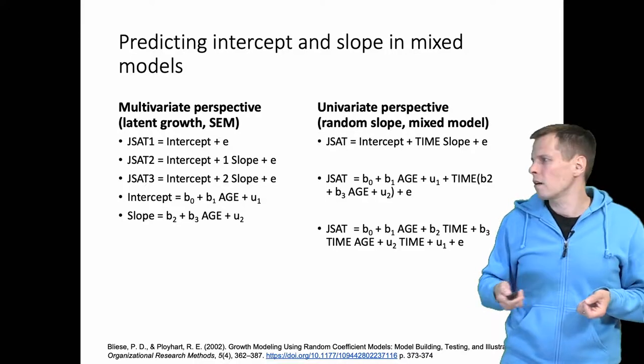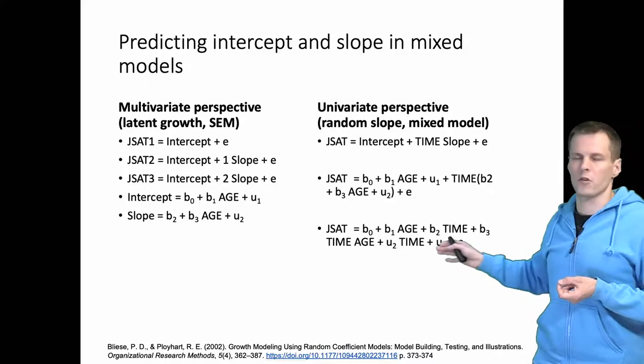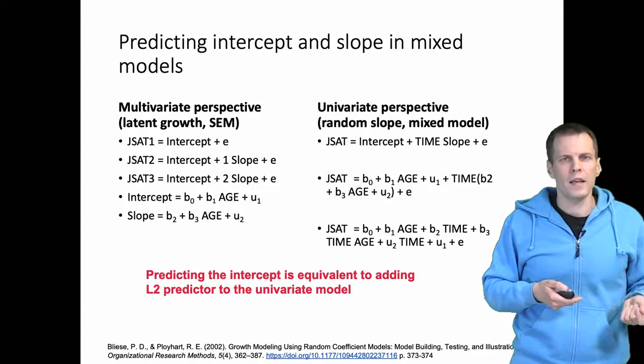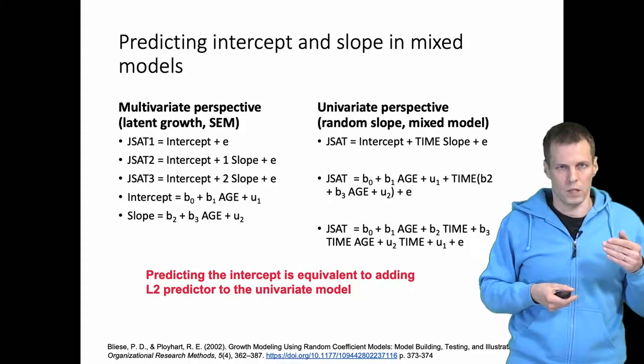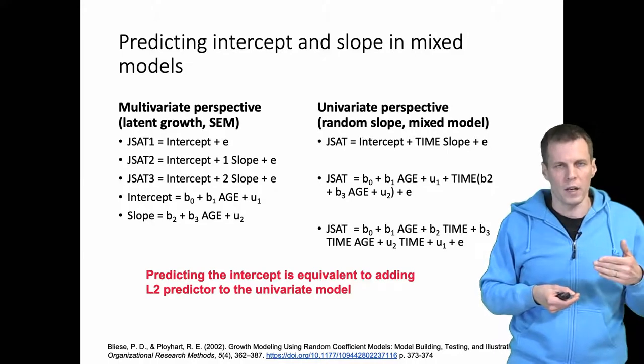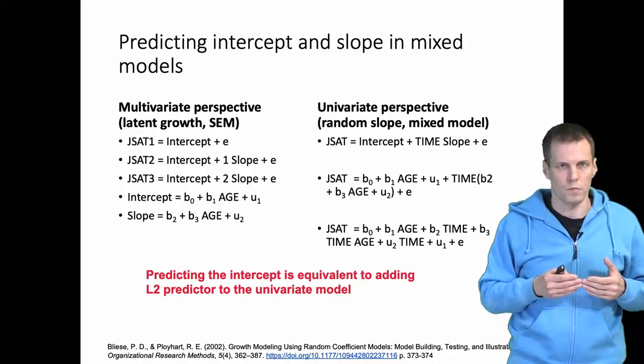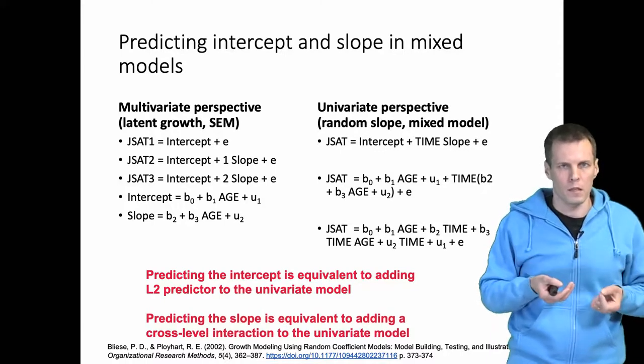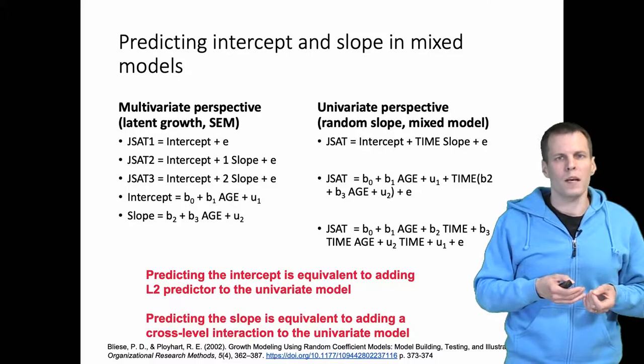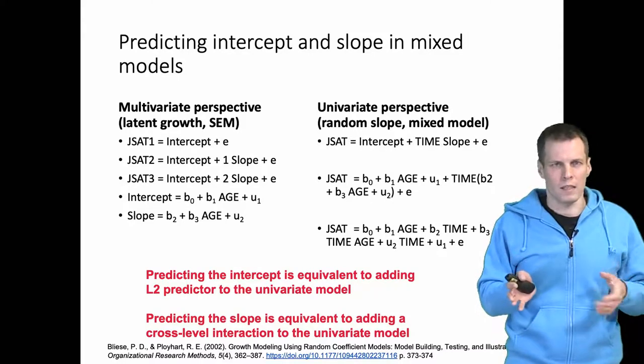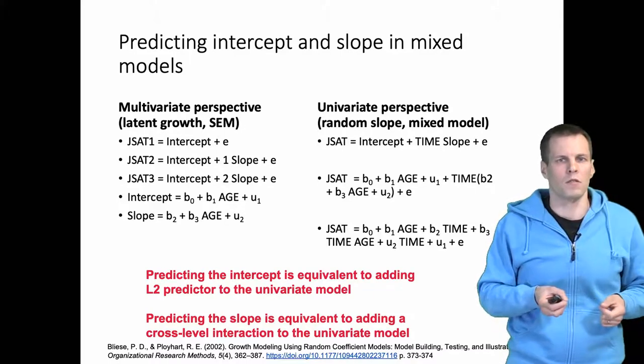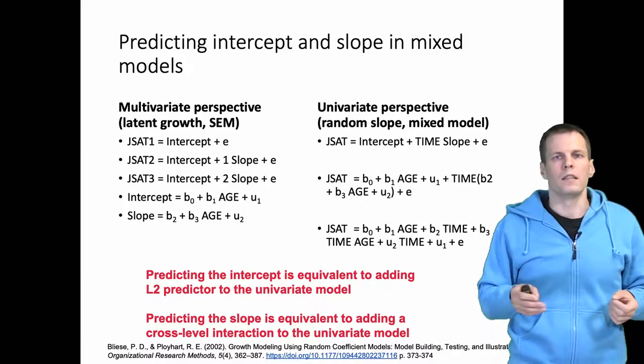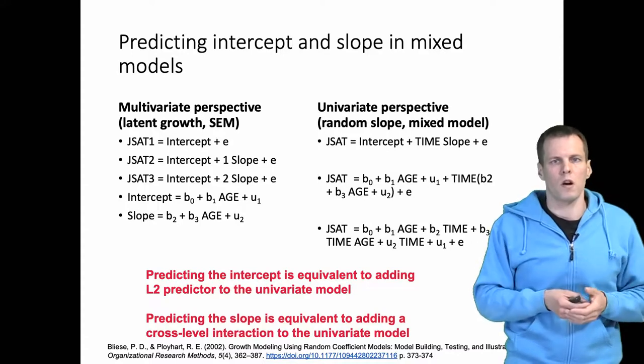If we write this out we can see that it's an interaction model. So what does this math tell us? It tells us that adding a predictor of the intercept is simply the same as adding the level two predictor directly as a predictor of all the observed variables. Adding a predictor of slope is basically the same thing as doing a cross-level interaction model. So if we have a mixed model of time as the main independent variable and we have a cross-level interaction, that is equivalent. We get the exact same likelihoods if we have balanced data that we would get from the growth curve model. So these models are basically the same.